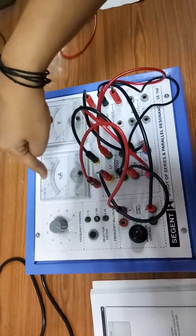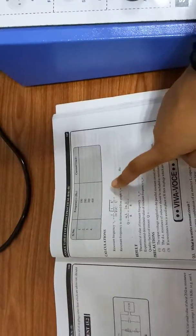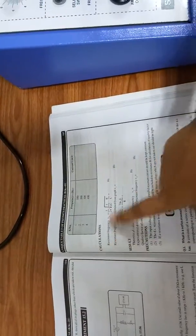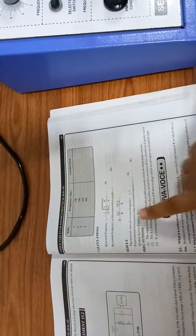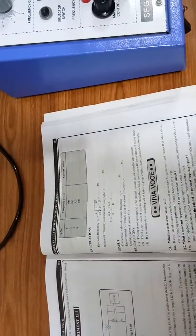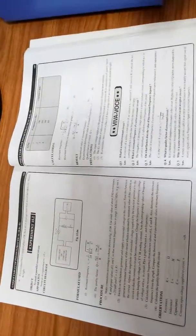As shown in the table, we'll calculate the values of resonant frequency and quality factor. This is how your experiment is done. For other reasons, you can go and check out the book. Thank you.